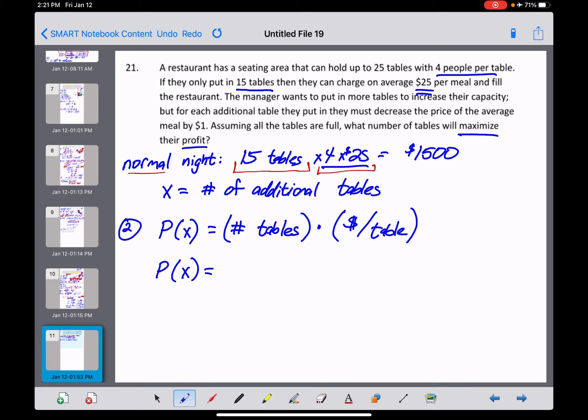P of X equals. So the number of tables on a normal night was 15, but we're talking about adding additional tables to that. So 15 plus X is going to be the number of tables that we end up setting up in our dining room that night. And then we're going to multiply that now by the amount of money that we're going to make per table. Well, for every dinner, we normally charge $25,